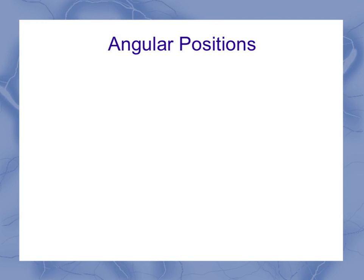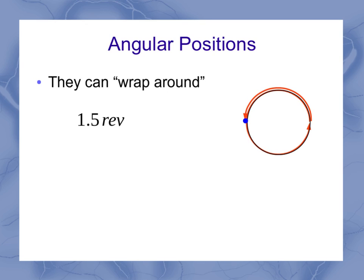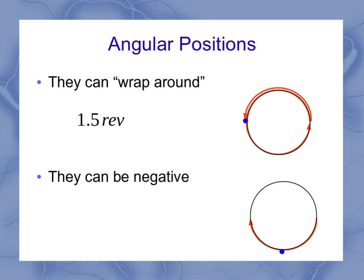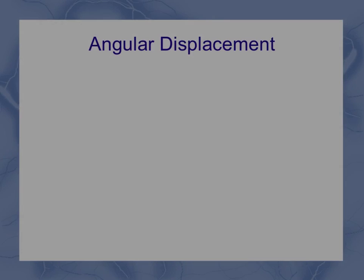A couple other things to know about angular positions: they can wrap around. So for example, if I have an object and it goes around but keeps going around, you can have something like 1.5 revolutions. You can also have negative positions if it wraps around the other direction. So this one would be negative 0.5 revolutions. Notice both of these particles look like they're at the same position. So we have to be a little careful with our angular positions and take into account the motion, which leads us to the concept of angular displacement.